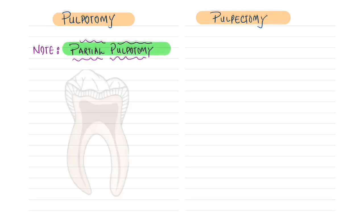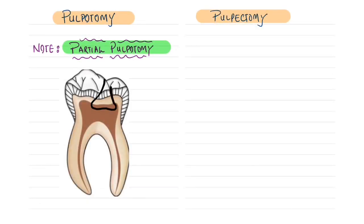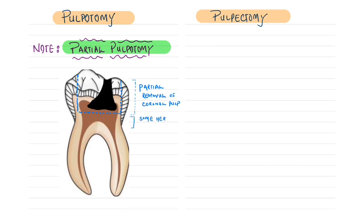One important technique to note is partial pulpotomy. In this procedure, if a tooth has minimal inflammation of the pulp tissue, we remove only the portion of the coronal pulp that is deemed inflamed or infected, retaining some healthy coronal pulp tissue as well as all radicular pulp tissue.